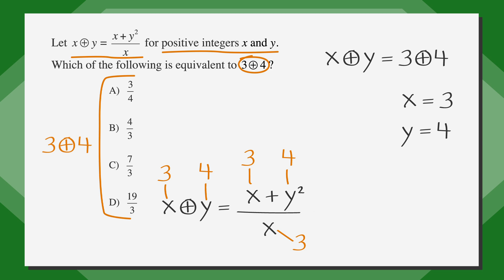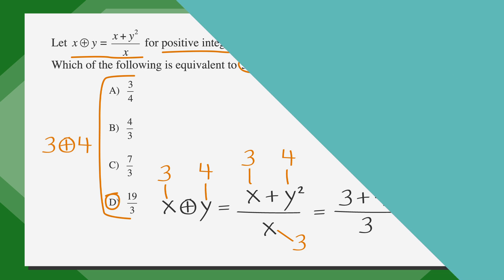Working out the fraction on the right side of the equation, we get (3 plus 4) squared over 3. This works out to 3 circle-cross 4 is equal to 19 thirds. Looking at our answer choices, answer choice D is 19 thirds. Circle it.